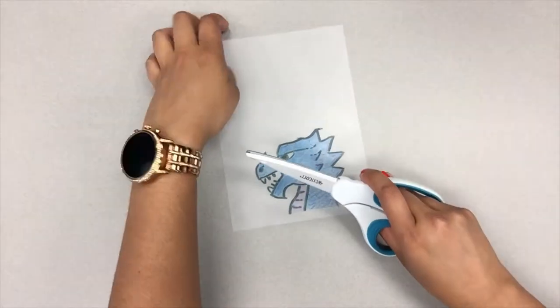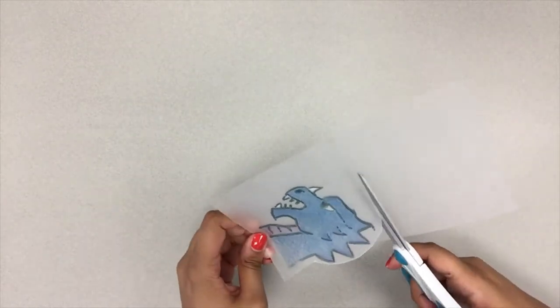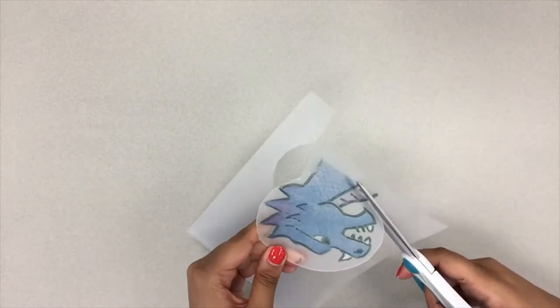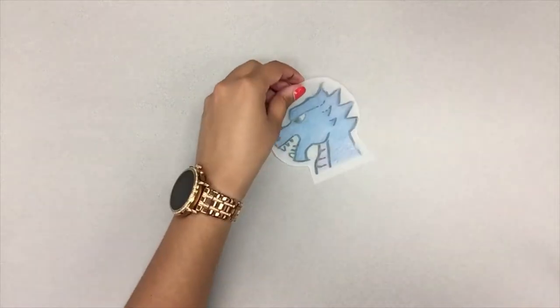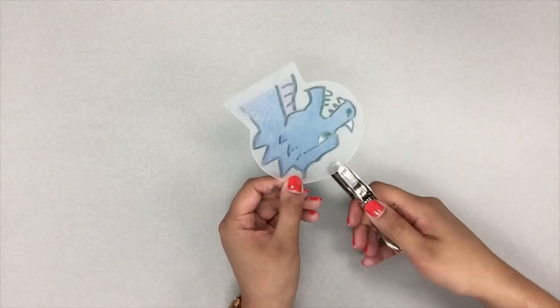Once colored, cut around your design, leaving a border of uncolored material around the image. This keeps the edges smooth after baking. Next, punch out a hole to insert the keychain strap after baking.